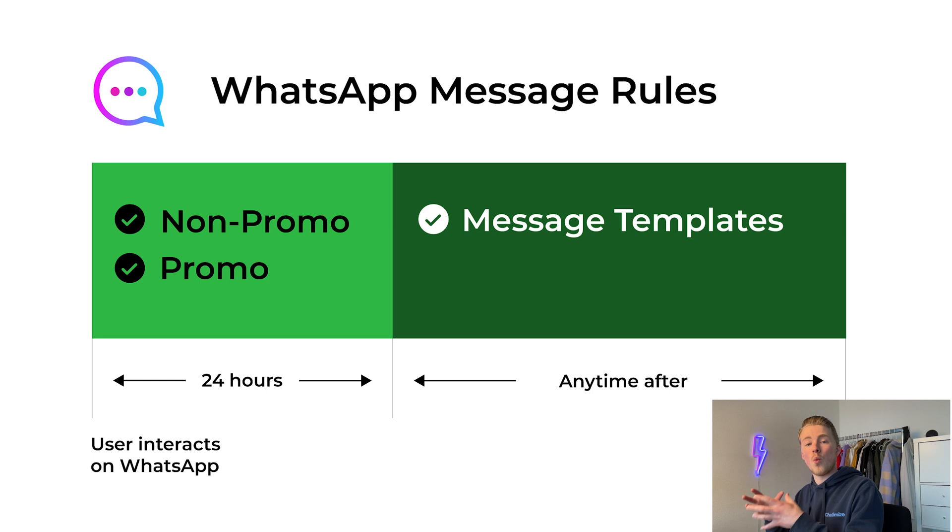First I will provide a quick recap of the WhatsApp message rules. With WhatsApp we have two types of conversations: user-initiated conversations and business-initiated conversations. User-initiated conversations are started by users with your WhatsApp chatbot, and business-initiated conversations are started by your WhatsApp chatbot with your users. Every time a user interacts with your chatbot, a 24-hour window will open — every time a user sends a message, clicks a button, or starts a conversation.